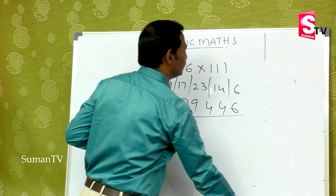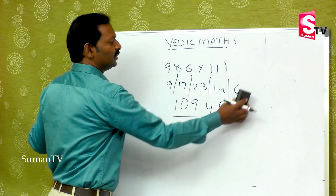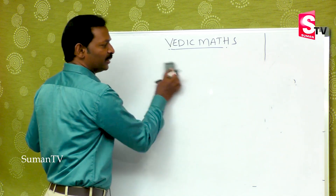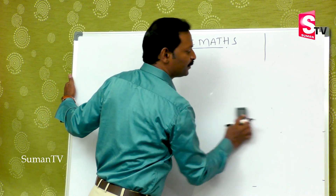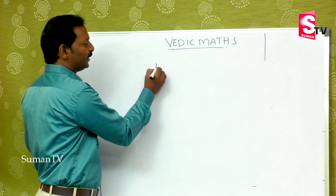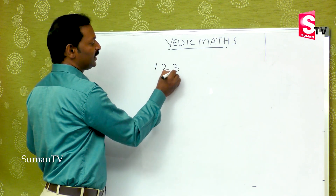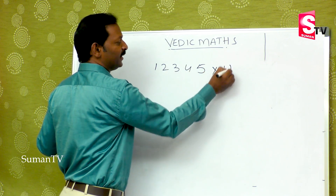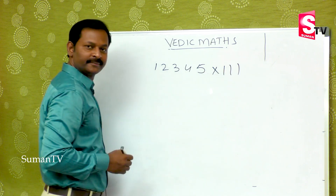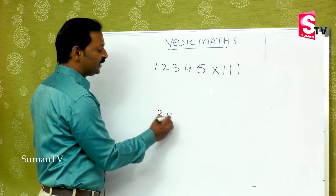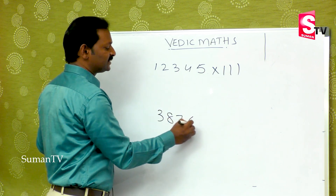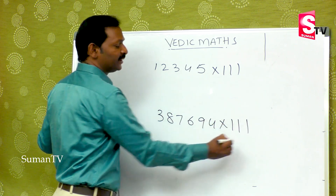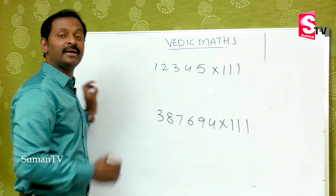As we did with a bigger number and 111, similarly with bigger numbers like 12345 multiplied by 111, or 3,876,994 multiplied by 111, this same method gives us the right answer.